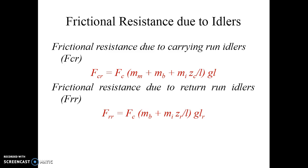The second force in the idler category is frictional resistance due to return run idlers, denoted FRR. One key difference is that MM is eliminated since material has already been discharged from the drive pulley. The formula becomes: (MB + MI·ZR / L) · G · LR, where ZR is the number of return run idlers and LR is the length of the return run section.